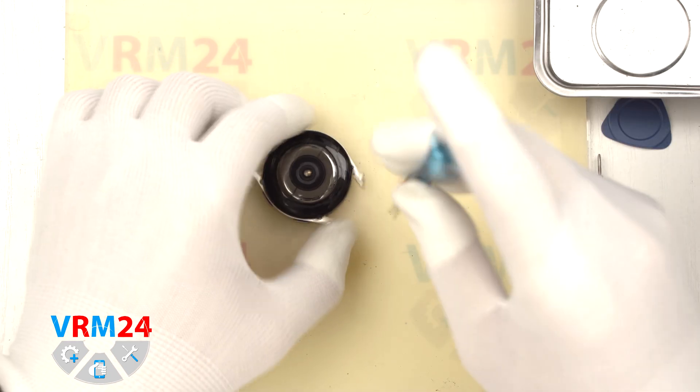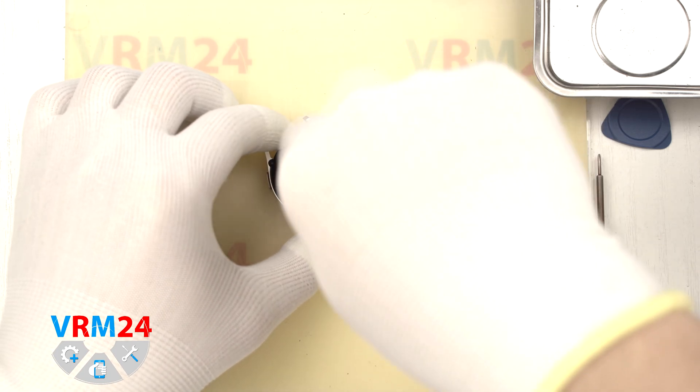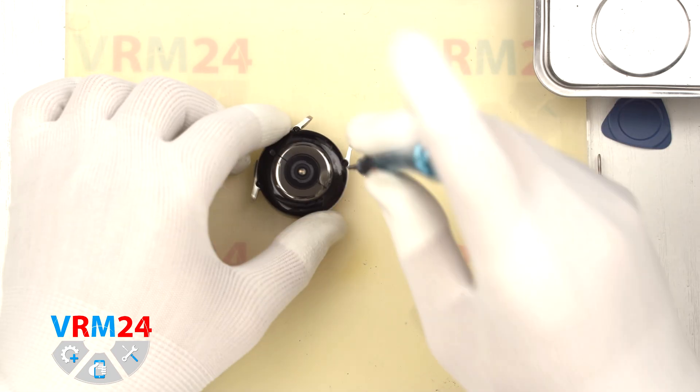After heating, we need to unscrew the screws that secure the back cover. For this we are using a 2mm 3-wing screwdriver.